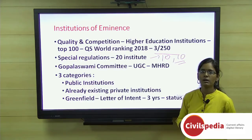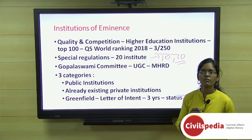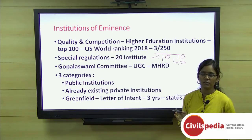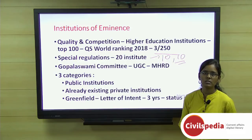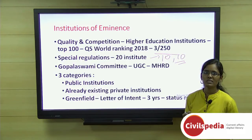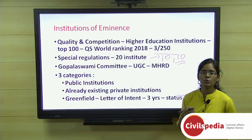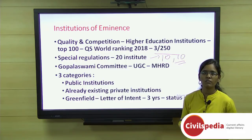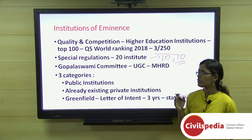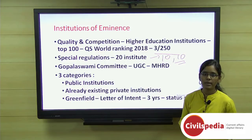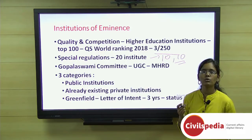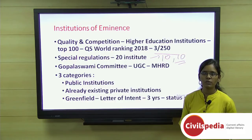The government planned to have 20 institutes under this scheme — 10 from public and 10 from private organizations. The Gopalaswamy Committee was constituted to identify eligible institutes. It gave 11 initial recommendations, with 6 being granted the status. The committee later recommended 30 institutes total, but UGC, adhering to the government guideline of 20, deferred the additional recommendations.